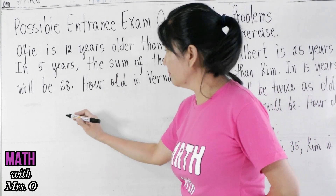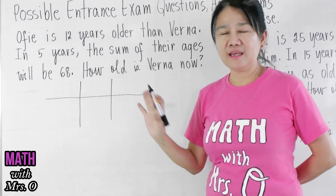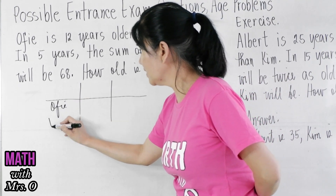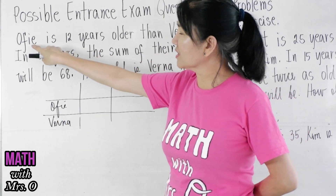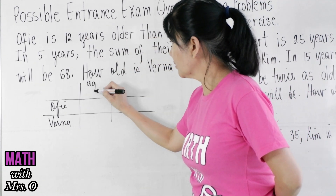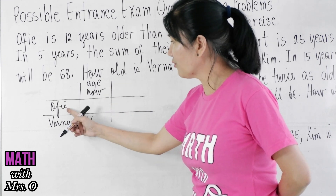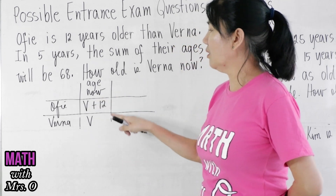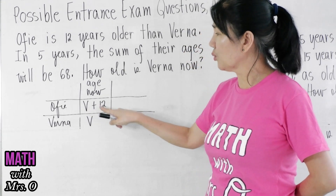In this kind of problem, it would be helpful if you draw a table, and then write the characters here — Ofi and Verna. Then read the first statement: Ofi is 12 years older than Verna. So you write here the age now. Verna is V, but Ofi is 12 years older than Verna, so Ofi must be V plus 12, because she is 12 years older.